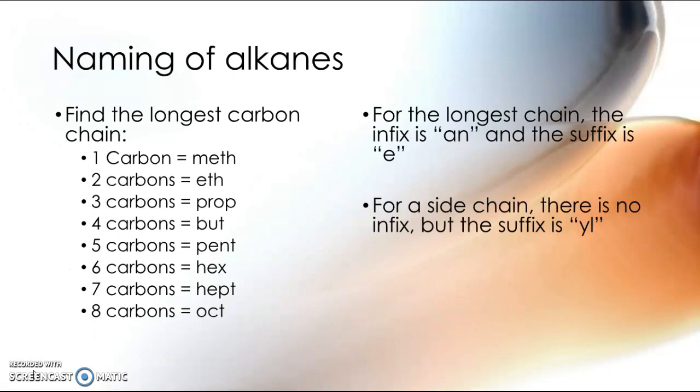So naming the alkanes gives us the basic idea about how to name all organic compounds. And the starting point is always the longest carbon chain. You need to know how to name alkanes with up to 8 carbons in the longest carbon chain. The prefixes you need to know are: 1 carbon is meth, 2 carbons is eth, 3 is prop, 4 is but, 5 is pent, 6 is hex, 7 is hept, and 8 is oct. And you need to learn those.